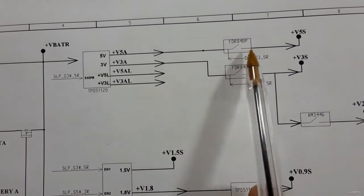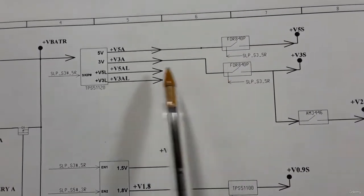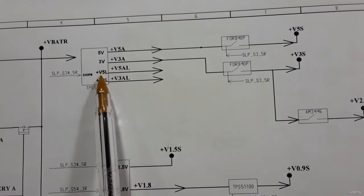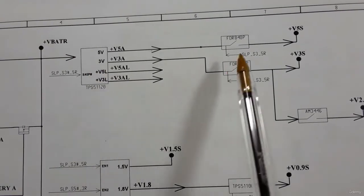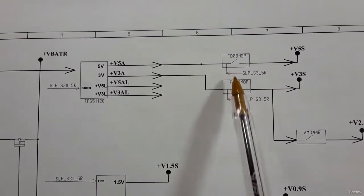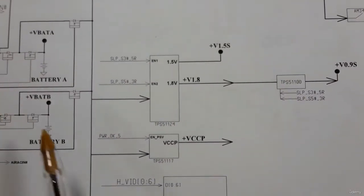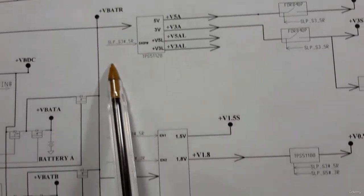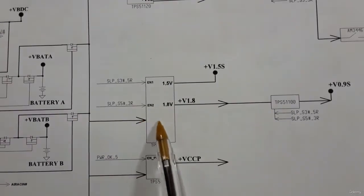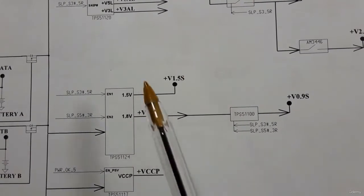The IC reference for this circuit is TPS51120. We have two MOSFETs — you will always find MOSFETs with the IC in each circuit. These two MOSFETs act as switches. V_bat is also applied to the next circuit.